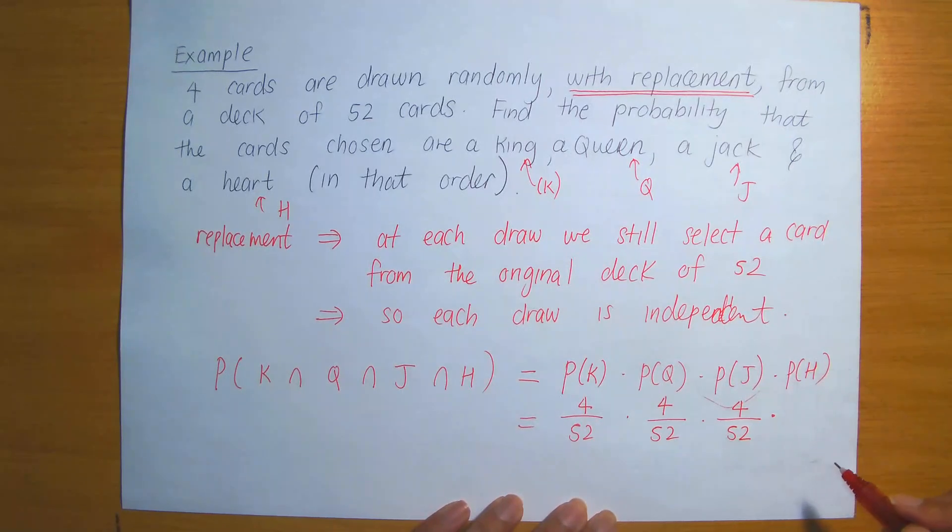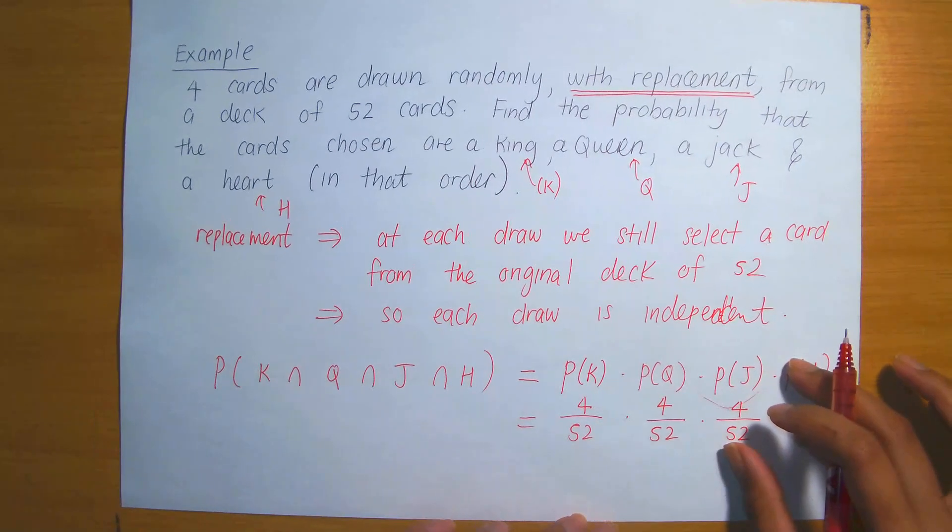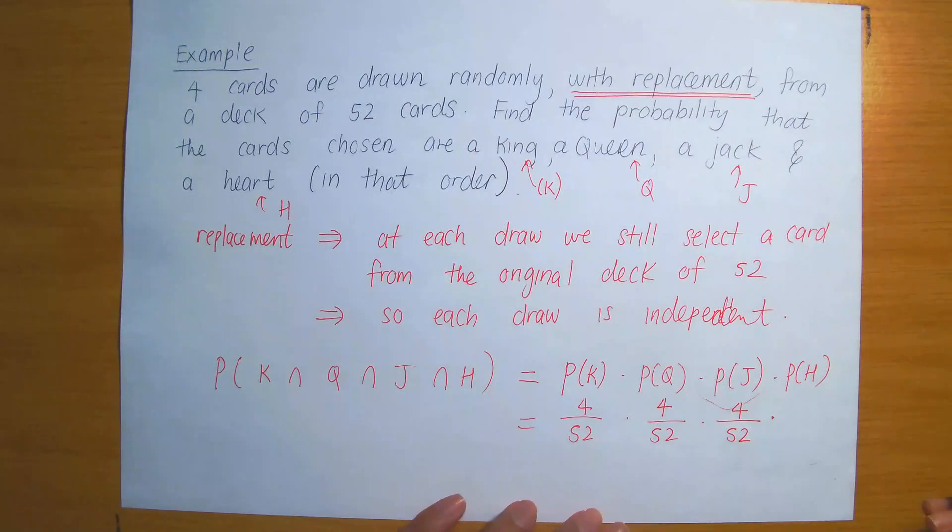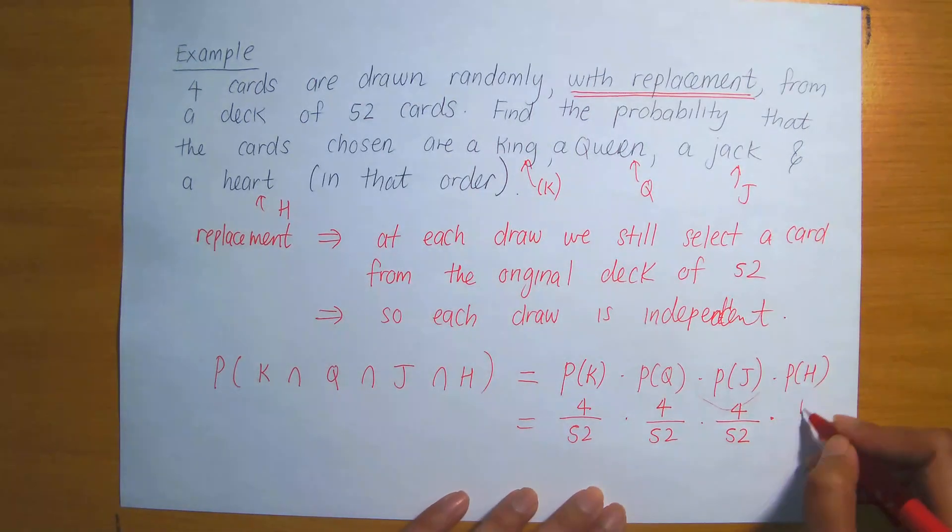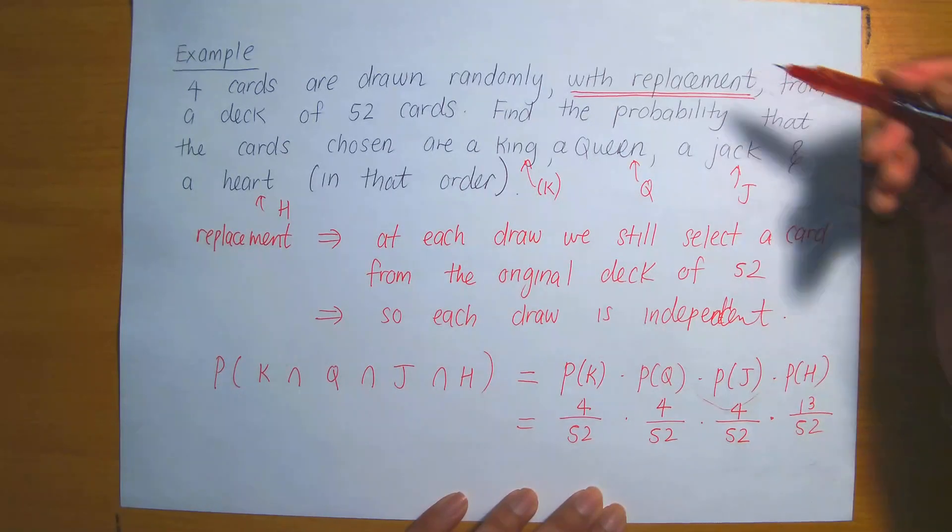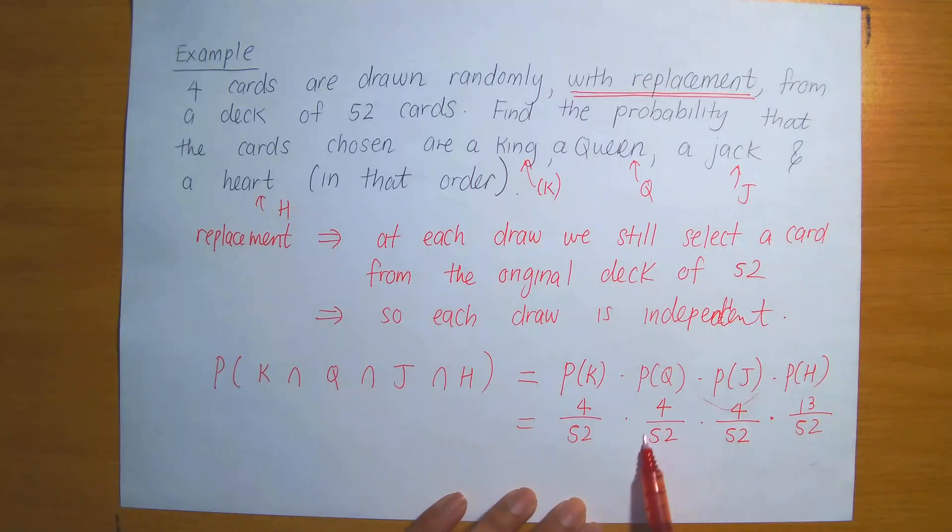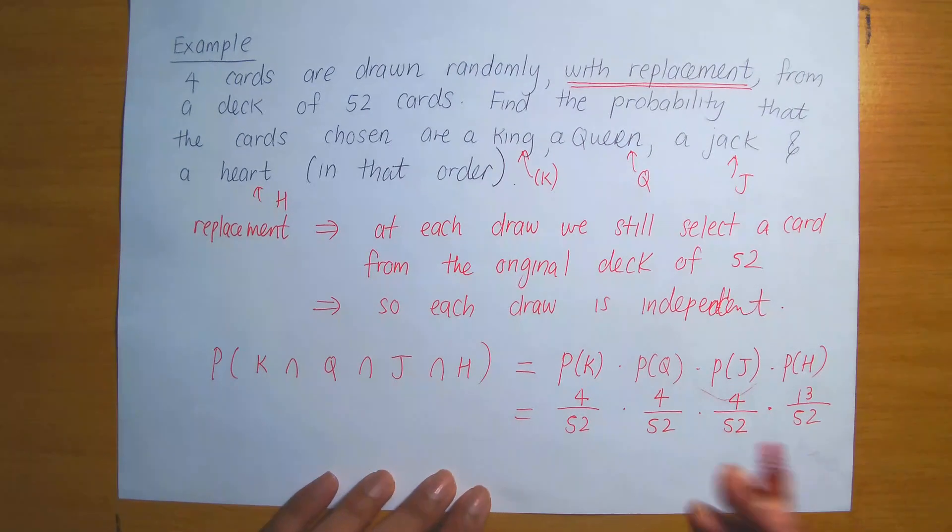And probability of selecting a heart. The heart is a suit. So there are 13 possible hearts in a deck of 52 cards. So that's 13 over 52. And what I was trying to mention before is that because there's replacement, the sample space remains unchanged in each successive selection. So therefore, it's always 52 in the denominator.